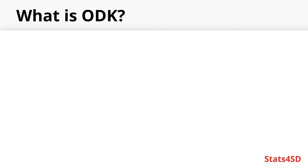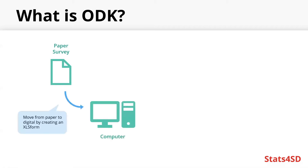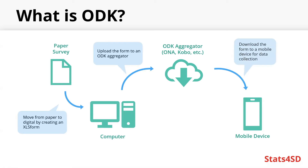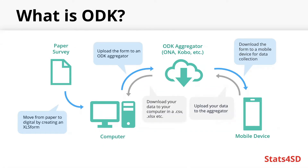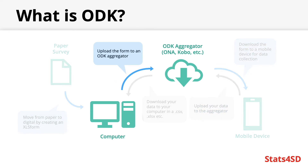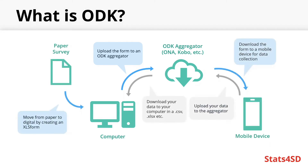Casting your mind back to the first presentation in this series, we explored ODK as transitioning from a paper survey to your computer by creating an XLS form, then from your computer to the ODK aggregator by uploading said form, then moving to your mobile device by downloading the form ready for data collection, then uploading your data back up to the aggregator, before finally downloading your data onto your computer. We have already seen the first step in the previous three presentations. This presentation will explore uploading your form to an ODK aggregator, and the next section will cover steps three and four.